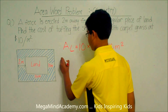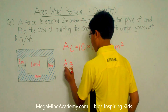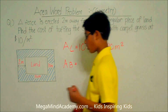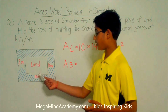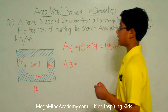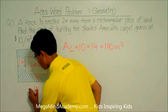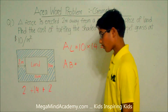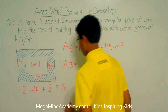Now let's find the area of the big rectangle. A_B for area of the big rectangle. Let's first find the dimensions. For the length, the piece of land is 14 meters. The fence is erected 2 meters away, so plus 2 meters on the left side and plus 2 meters on the right side. So 2 plus 14 plus 2 equals 18 meters.